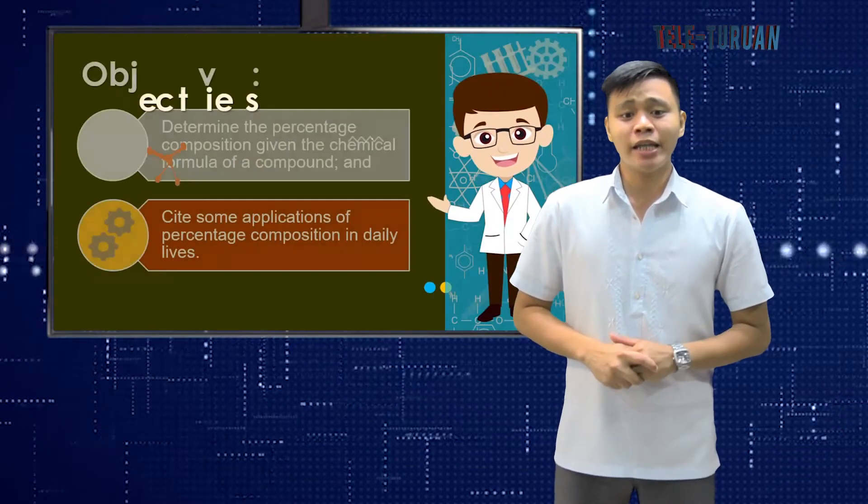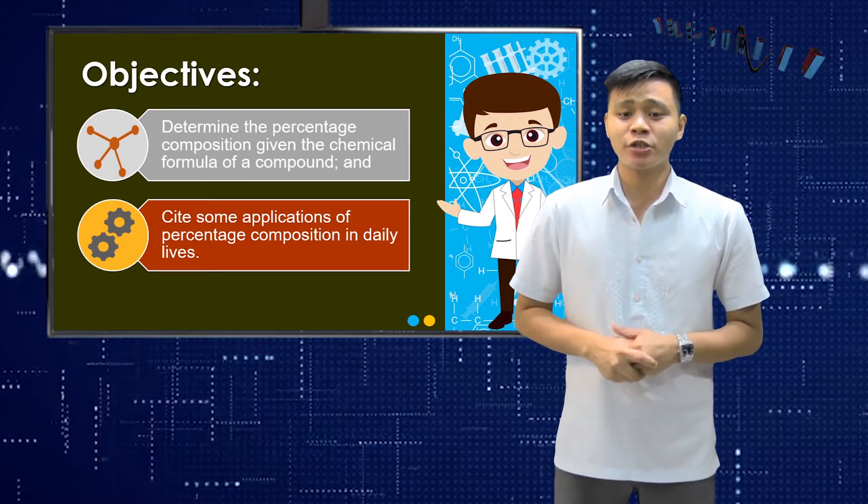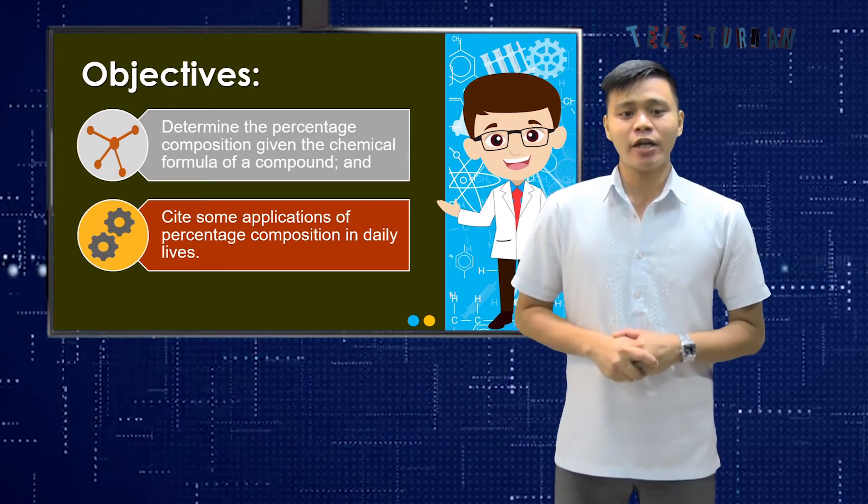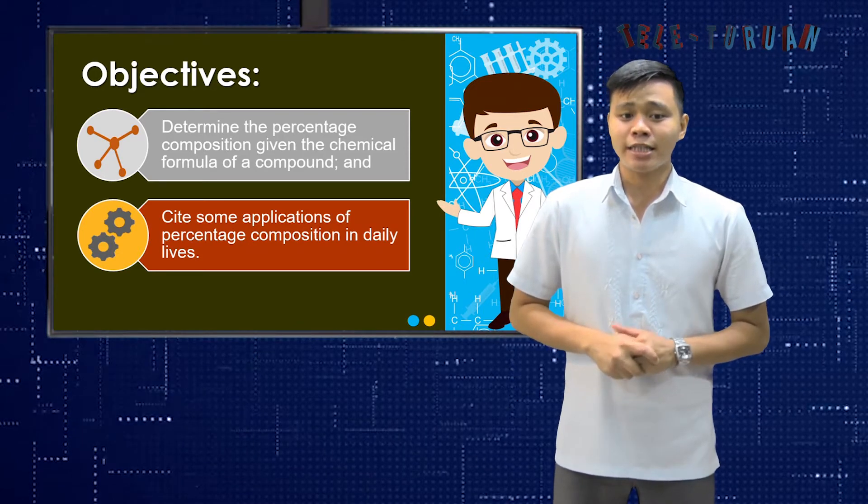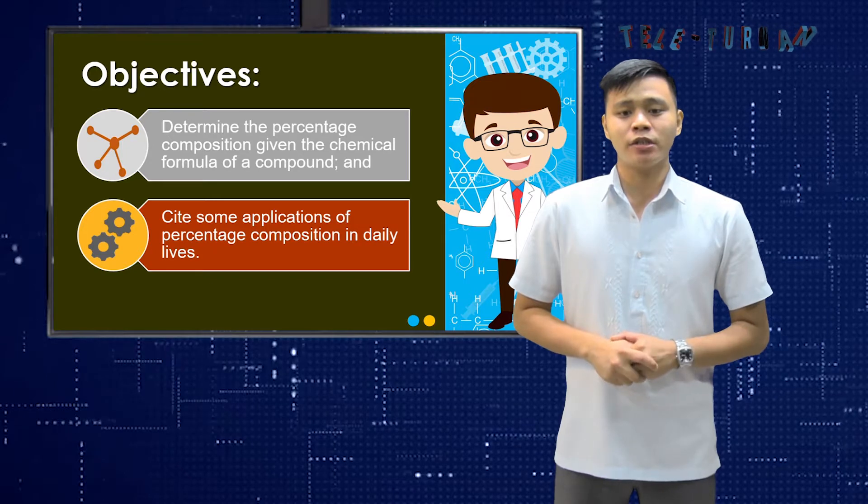And so at the end of the lesson, you're expected to be able to, first, determine the percentage composition given the chemical formula of a compound, and second, cite some applications of percentage composition in daily lives.